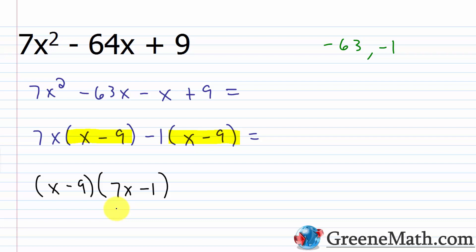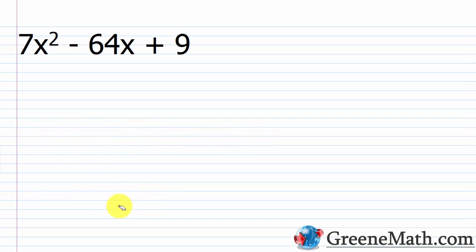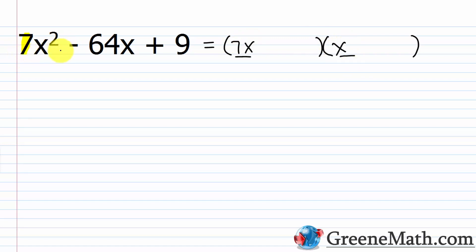Now let's talk about factoring with reverse FOIL, or trial and error. I'll set up my parentheses and think about what goes in each position. We're lucky here because 7 is a prime number — the easiest case for reverse FOIL — since 7 can only come from 7 times 1, and x² can only come from x times x. So I put 7x and x. If the leading coefficient were non-prime like 10, I'd also have to consider 2 and 5, making it more tedious.